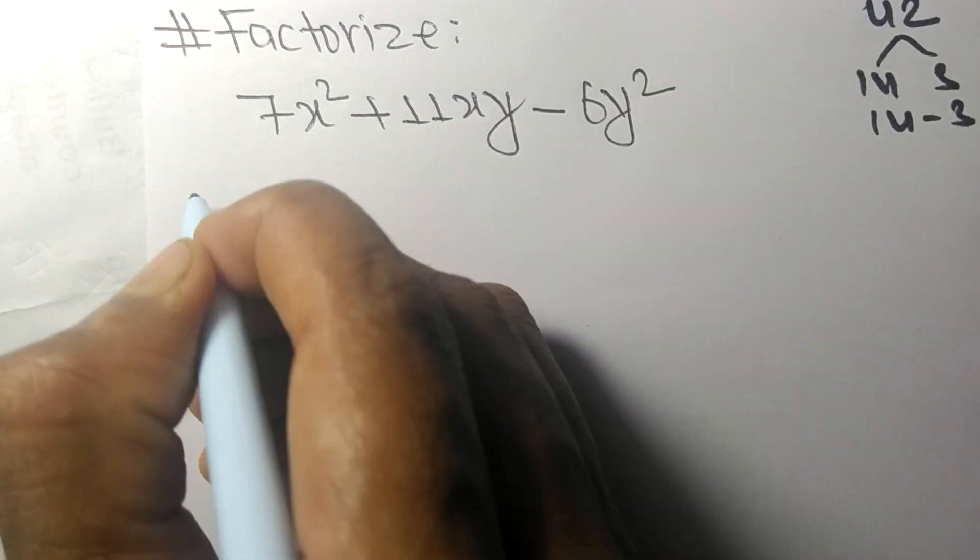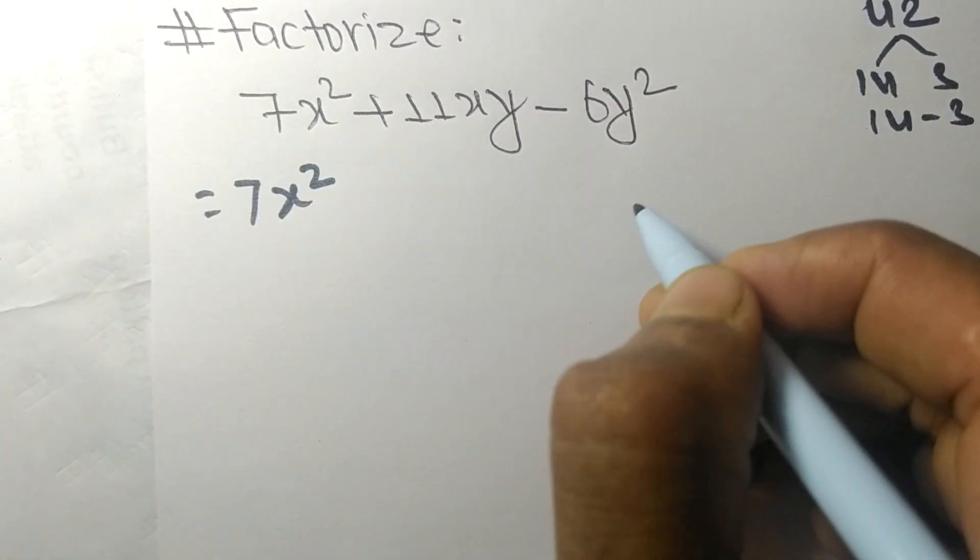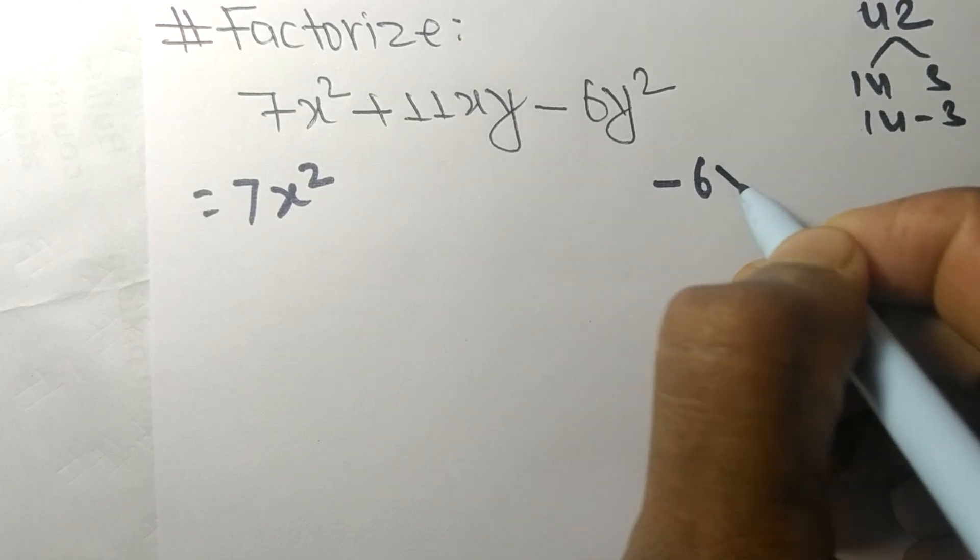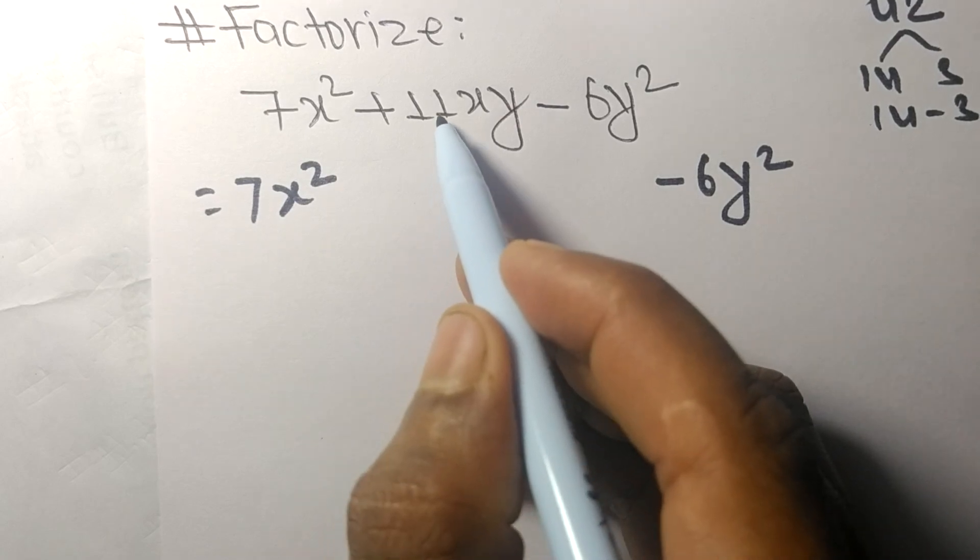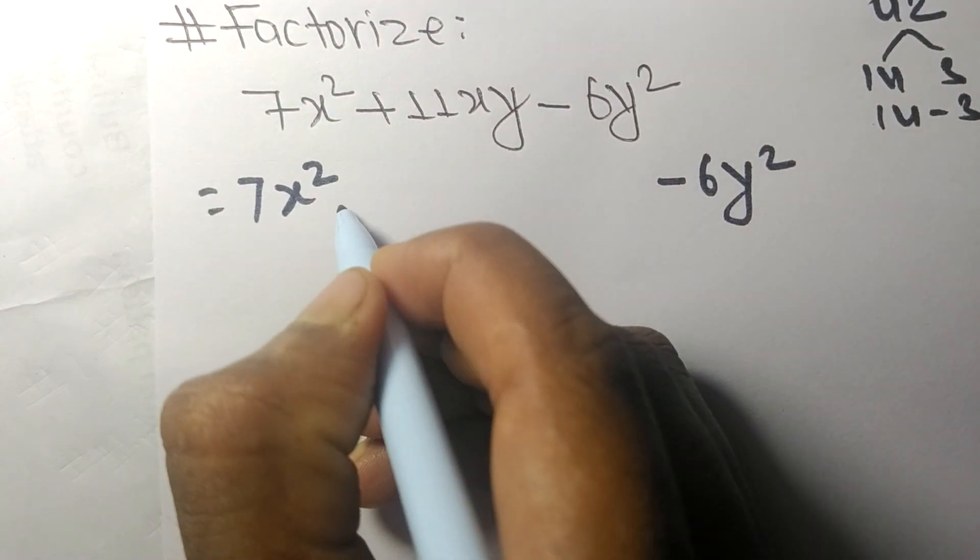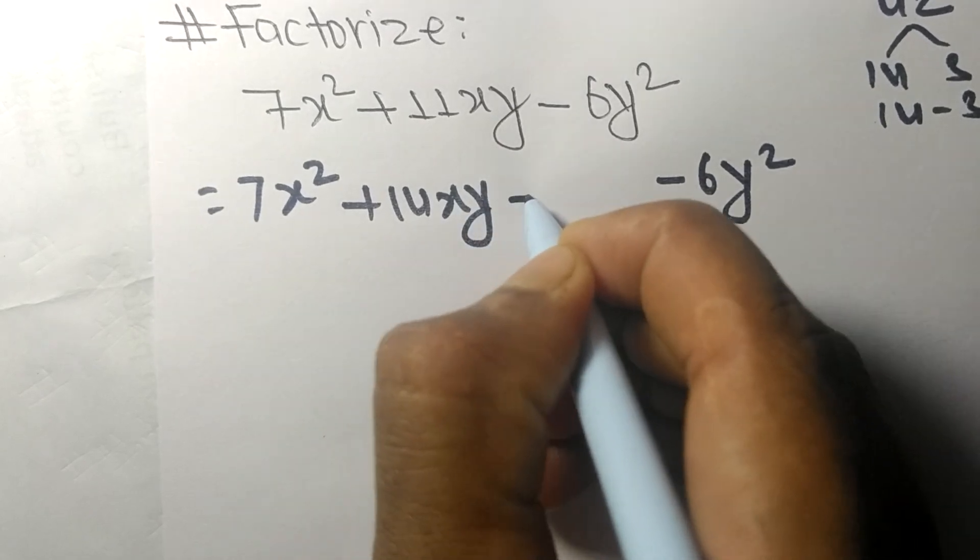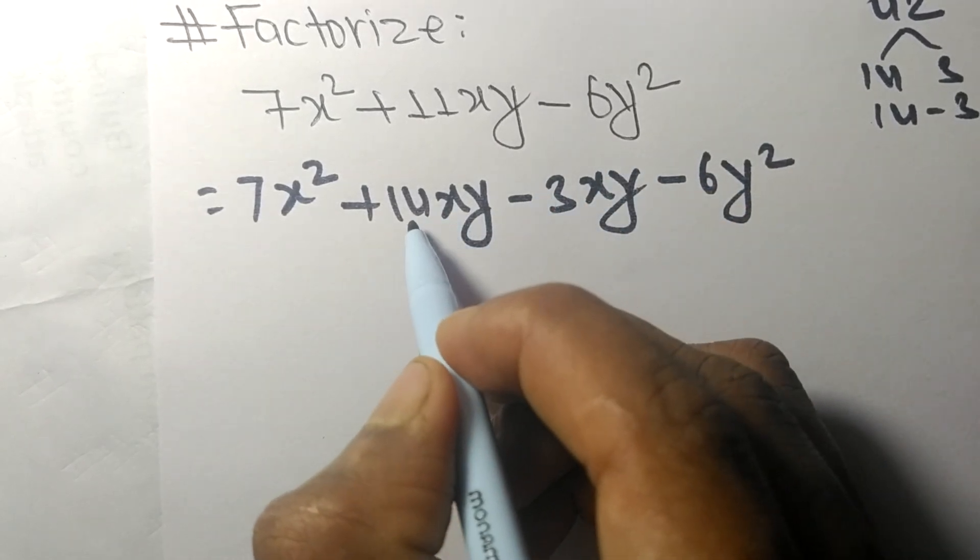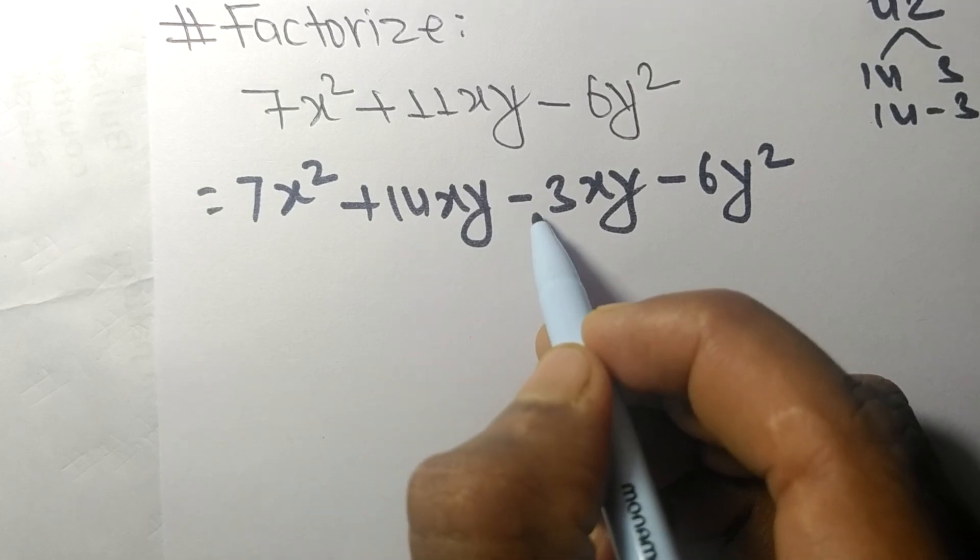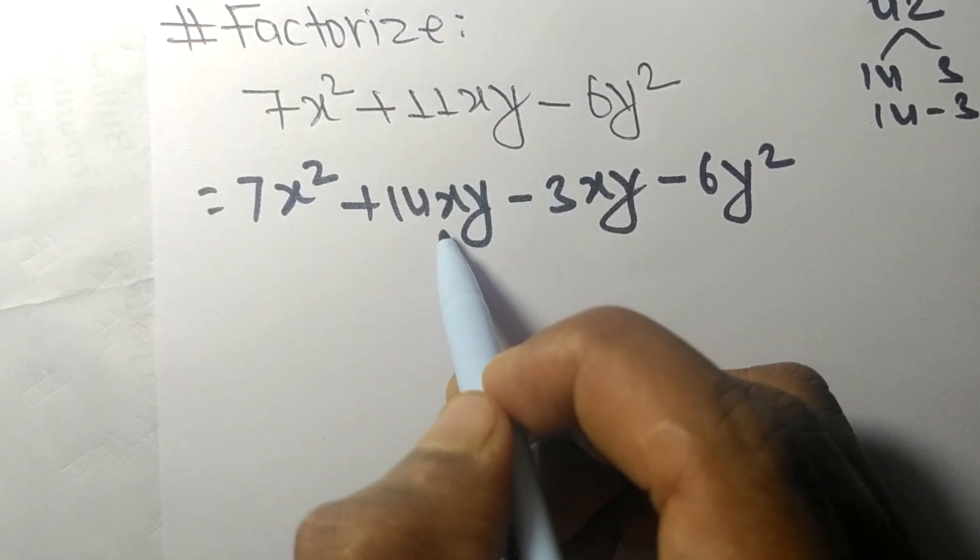So here, the first expression is 7x² and the last expression is -6y². Both are the same. Now we separate 11xy into two parts: +14xy - 3xy. So +14xy - 3xy means 11xy, and 14 times 3 means 42.